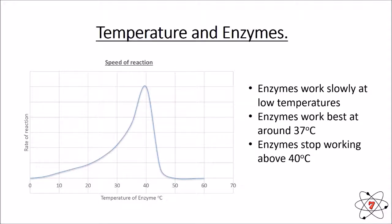The reason enzymes work slowly at low temperatures is because particles are moving very slowly, and when particles move slowly they are unlikely to collide with each other. In order for a chemical reaction to take place, particles must collide. As temperatures increase, particles move faster and are more likely to collide, so a reaction can take place.